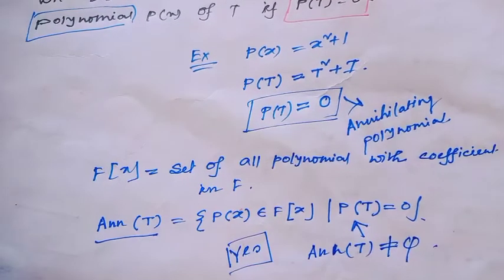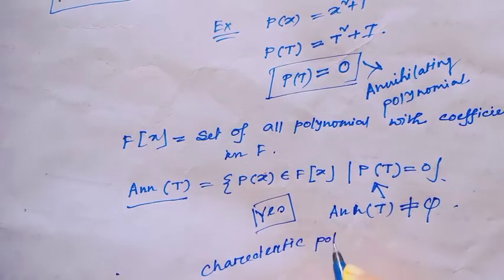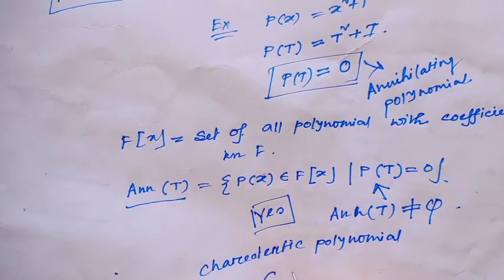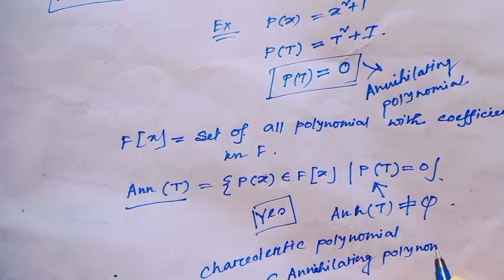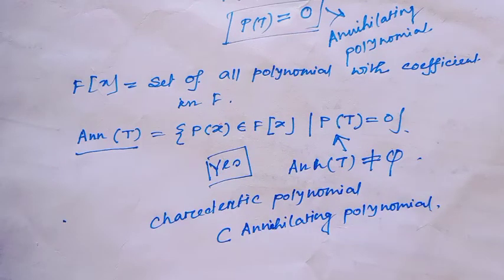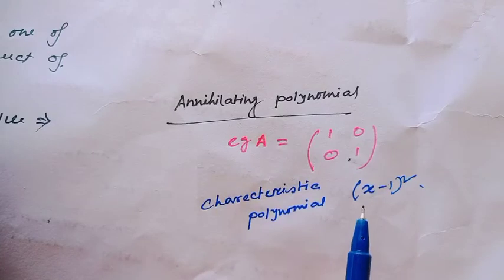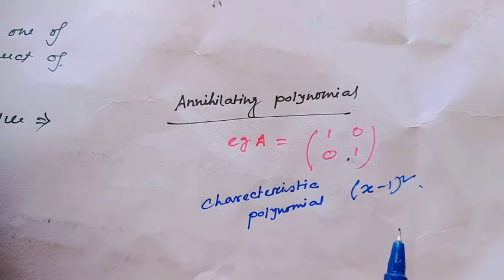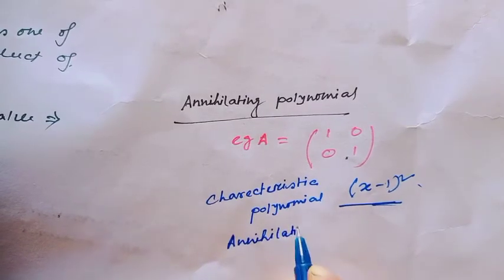When this value equals zero, the polynomial is called an annihilating polynomial. The annihilating set of T, denoted Ann(T), is the set of all p(x) in F[x] such that p(T) = 0. For any linear transformation, there always exists an annihilating polynomial — because the characteristic polynomial always exists. So Ann(T) is non-empty, and the characteristic polynomial is a member of Ann(T).